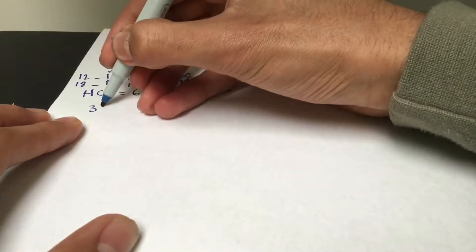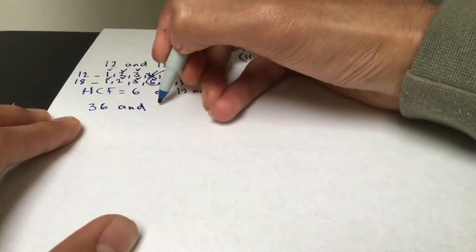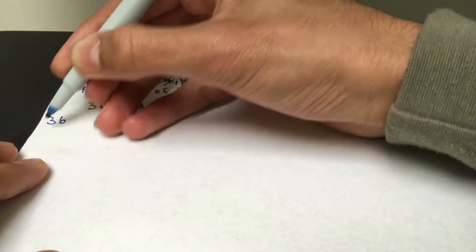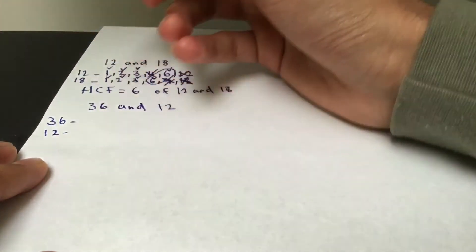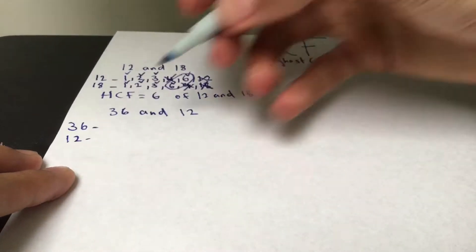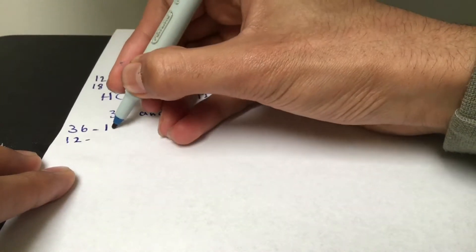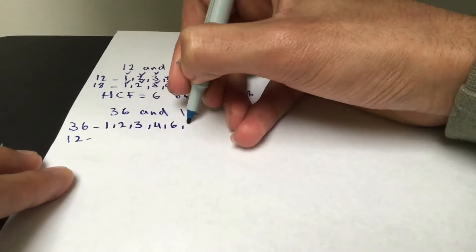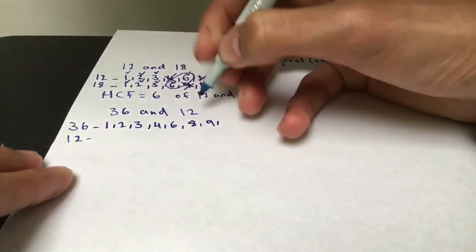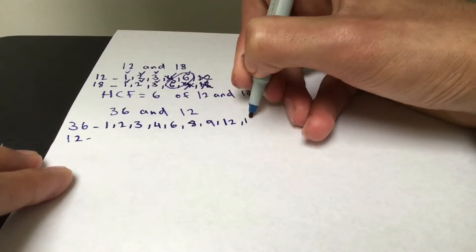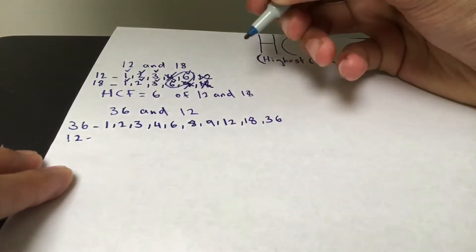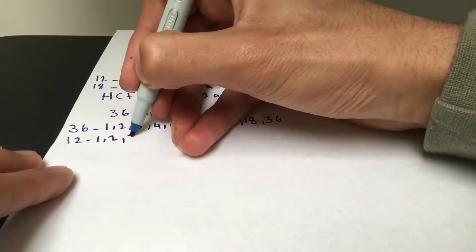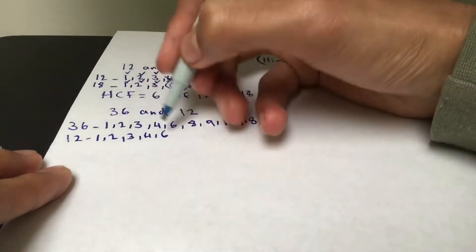Let's move on to 36 and 12. We do the same thing — find the factors of both. For 36: 1, 2, 3, 4, 6, 8, 9, 12, 18, and 36. For 12: 1, 2, 3, 4, 6, and 12.